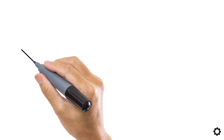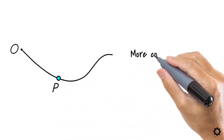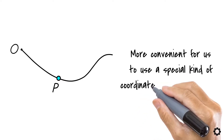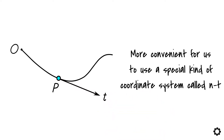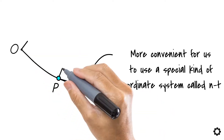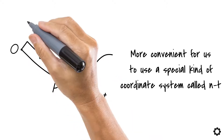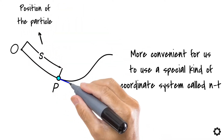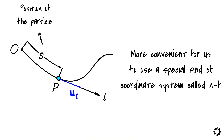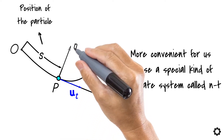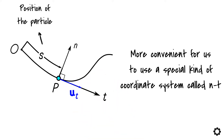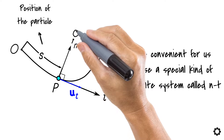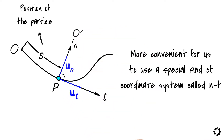In some cases, when we know the path along which the particle is moving, it could be more convenient to use a special kind of coordinate system called the n-t coordinate system. The t-axis acts as a tangent for the curve at the location of the particle p, and its positive direction is towards the increasing s, which represents the position of the particle on the curve. We will use the unit vector ut to represent this positive direction. Likewise, the n-axis acts as the normal for the curve at the same location of the particle p, and is perpendicular to the t-axis. Its positive direction is towards the center of curvature o', for which we will use the unit vector un to represent it.